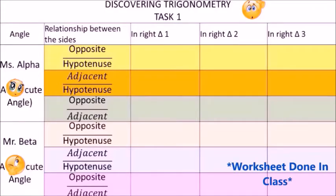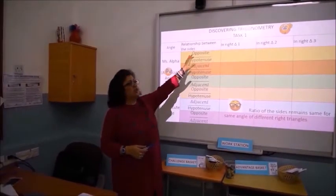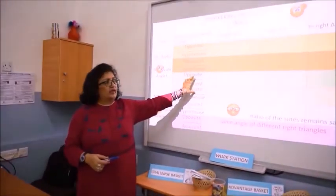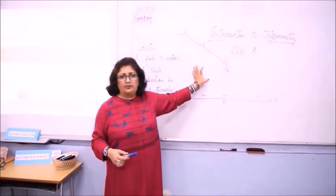Students, let us discover trigonometry with the help of similar right triangles. In similar triangles you have already learnt that the sides are proportional. Now let us begin with task 1 and find the relation between the sides of a right triangle in relation with acute angles. Alright girls, have you all made the triangles? Yes ma'am. I am giving you the worksheet. Based on your findings, you fill this worksheet. Let us discover trigonometry through this worksheet.